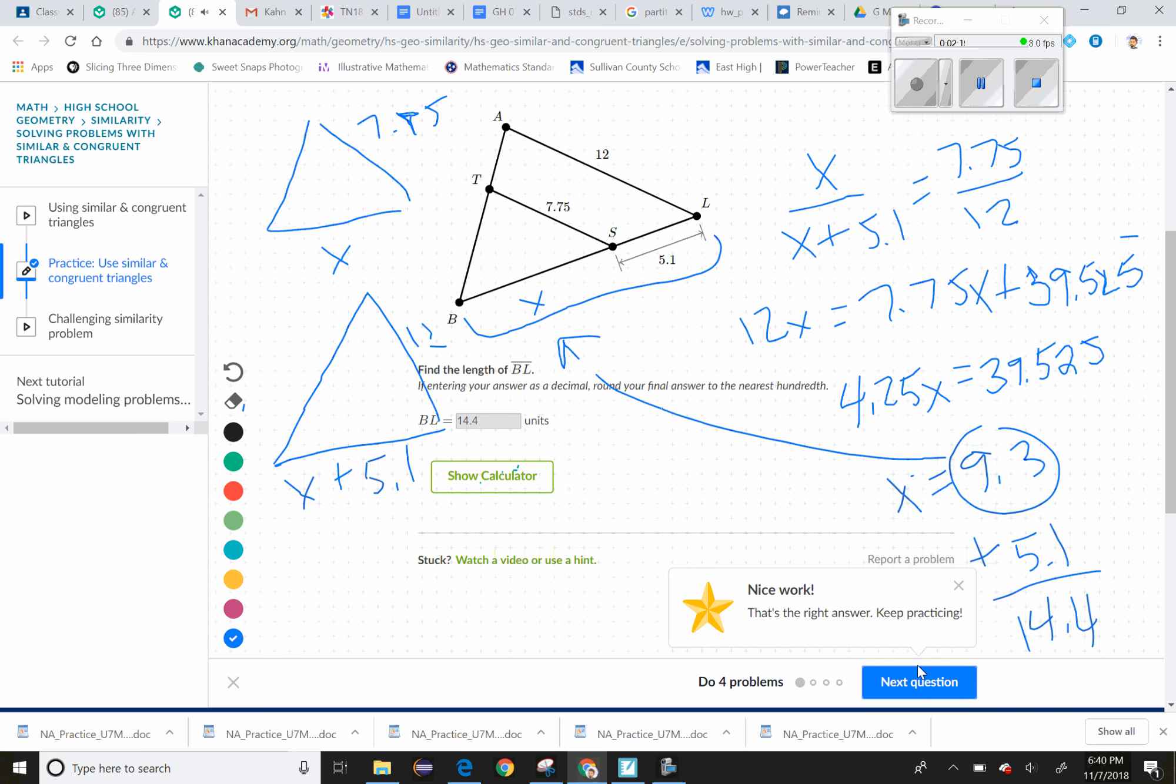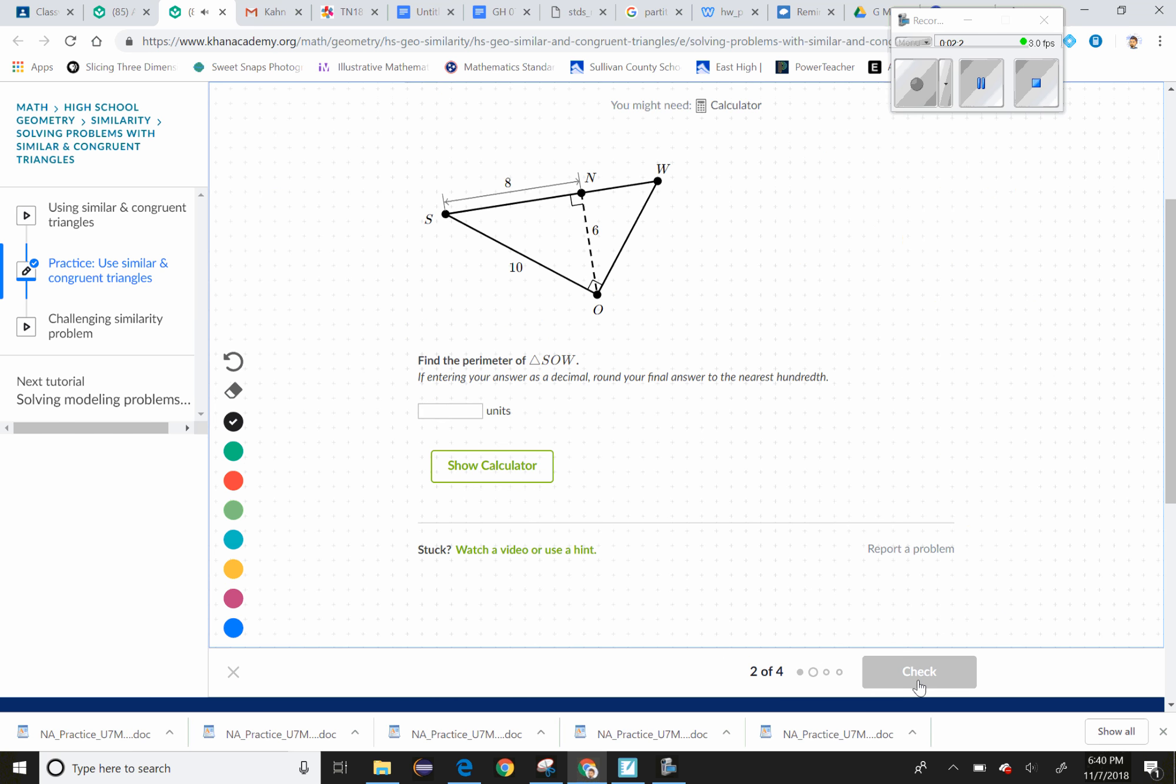There we go, next question. Okay, so this is one we talked about today that involves our geometric mean deal. If you'll recall, this altitude to the hypotenuse right here created these two triangles that are similar to the original and to each other. We said that this 10 is going to be the geometric mean of X and the entire hypotenuse which we don't know.